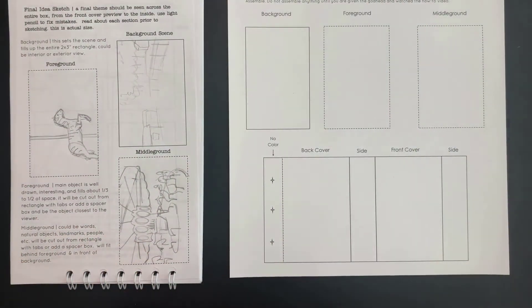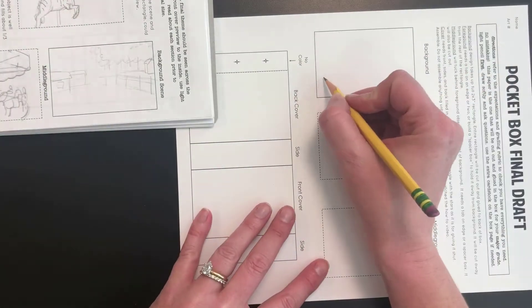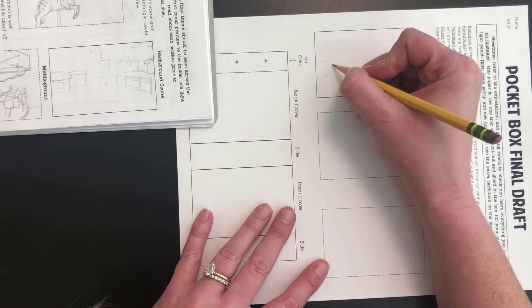Draw lightly in pencil first, ask questions when you need to, and use the extra cardstock on the box page if you need.